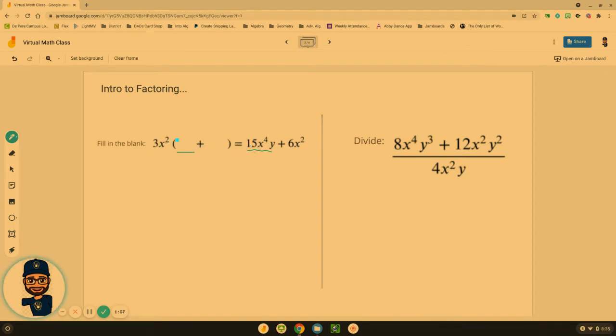So 3 times what is 15? That would be 5. x² times what is x to the fourth? That's an x². And notice we still have a y on here but I don't have a y out there which means it needs to be part of that term. 5x²y would be the first blank.